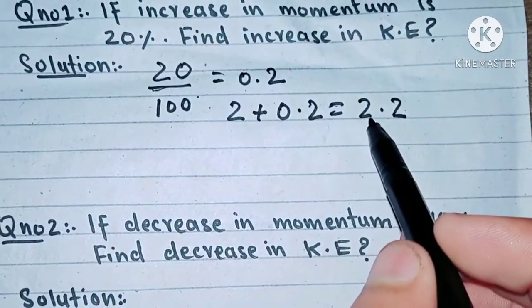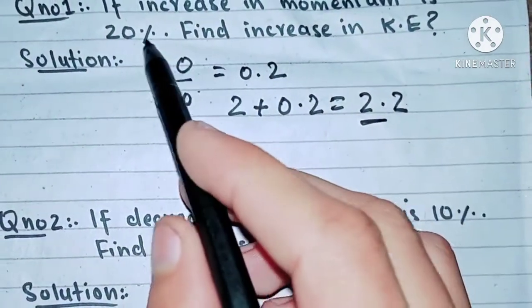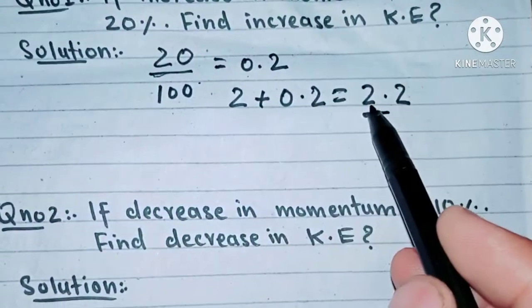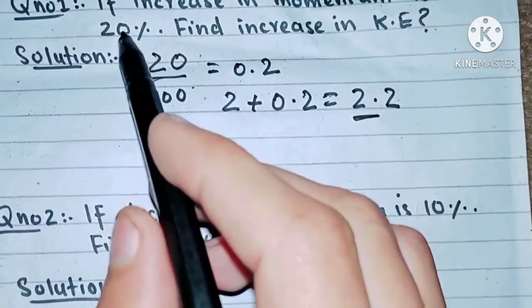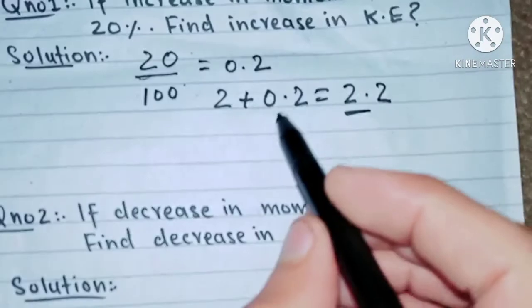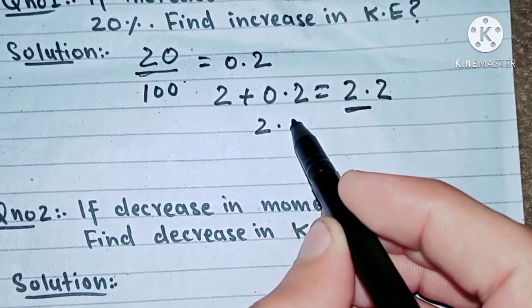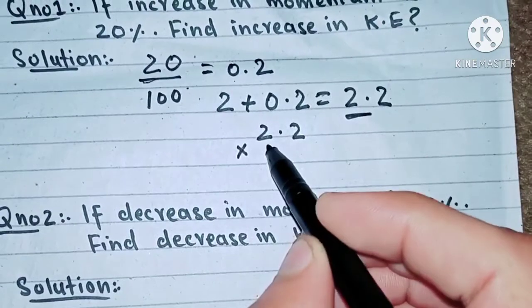In the final step, you will have to multiply this value with the 20, the given percentage. Now you will have to multiply this value with the given percentage, like 2.2 multiplied by 20.